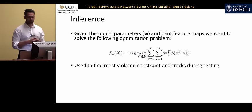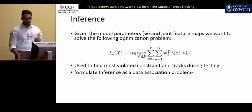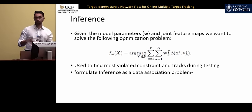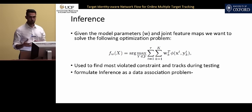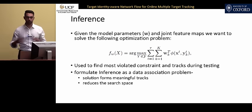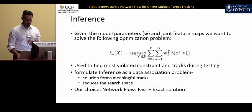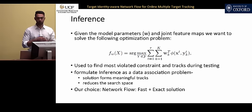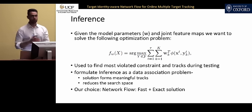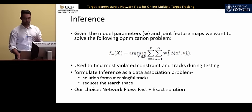We use the inference function to find the most violated constraint and also to find the tracks during testing once learning is complete. We propose to formulate inference as a data association problem because we want to ensure tracks are meaningful. Formulating it as data association lets us impose physical constraints for meaningful tracks and reduce the search space by enforcing temporal consistency. Network flow is our choice because it's fast and has an exact solution — having an exact solution opens the door for powerful structural learning methods.